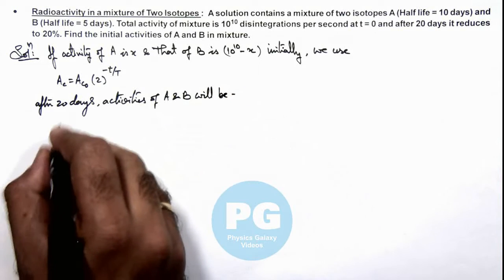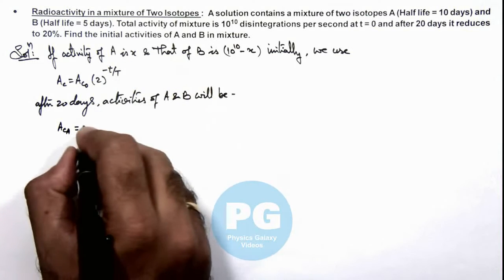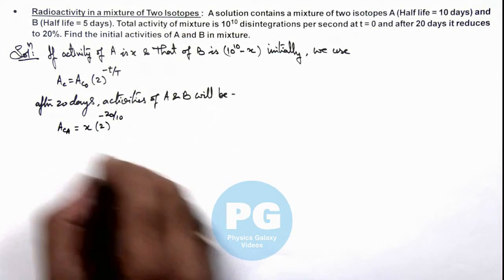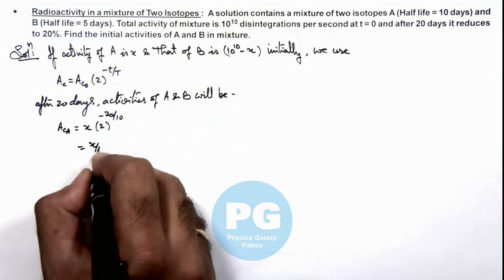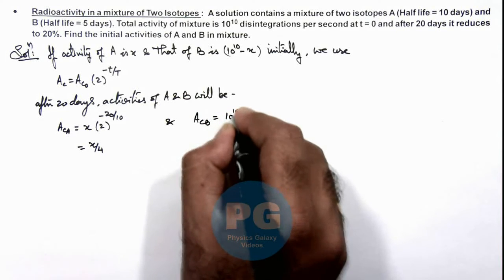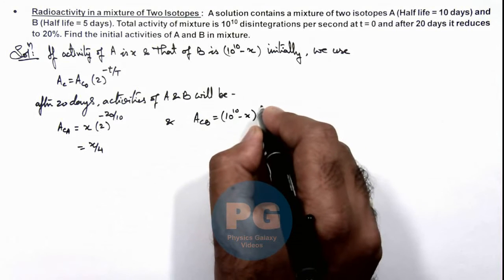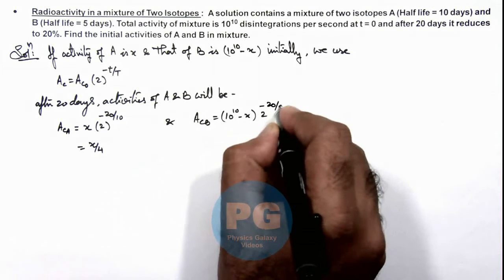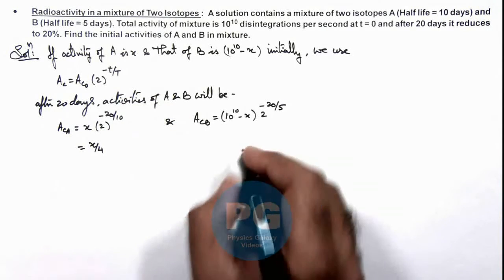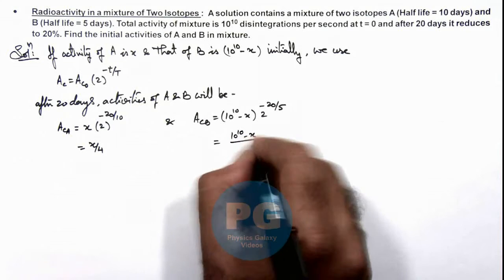We can write activity of A will be: initial activity, if it was x initially, times 2 to the power minus 20 by 10, that is equal to x by 4. And we can write activity of B equals 10^10 minus x multiplied by 2 to the power minus 20 by 5, because the half-life for B is 5 days. So on solving, this gives us 10^10 minus x divided by 16.